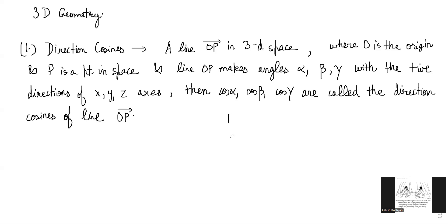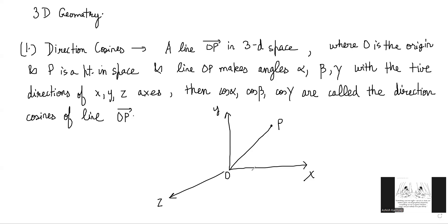The meaning of this definition: in 3D space, if you have a point P somewhere and this is your origin, this line makes some angles with all three axes. It makes a certain angle with the y-axis, a certain angle with the x-axis, and a certain angle with the z-axis. To find these angles, you make a plane containing the line and the axis you are talking about, and in that plane you figure out the angle.